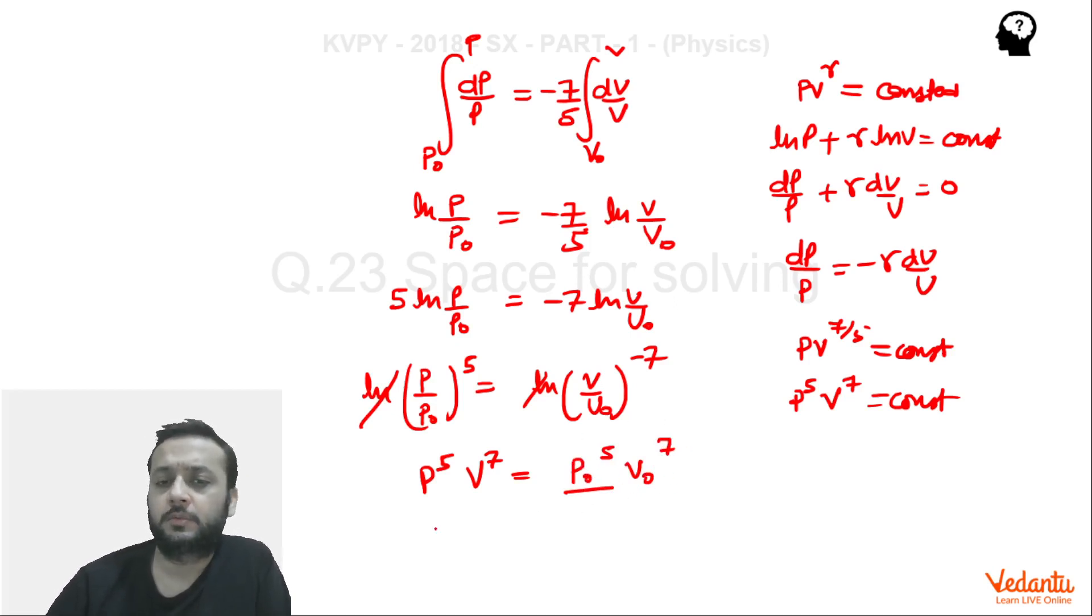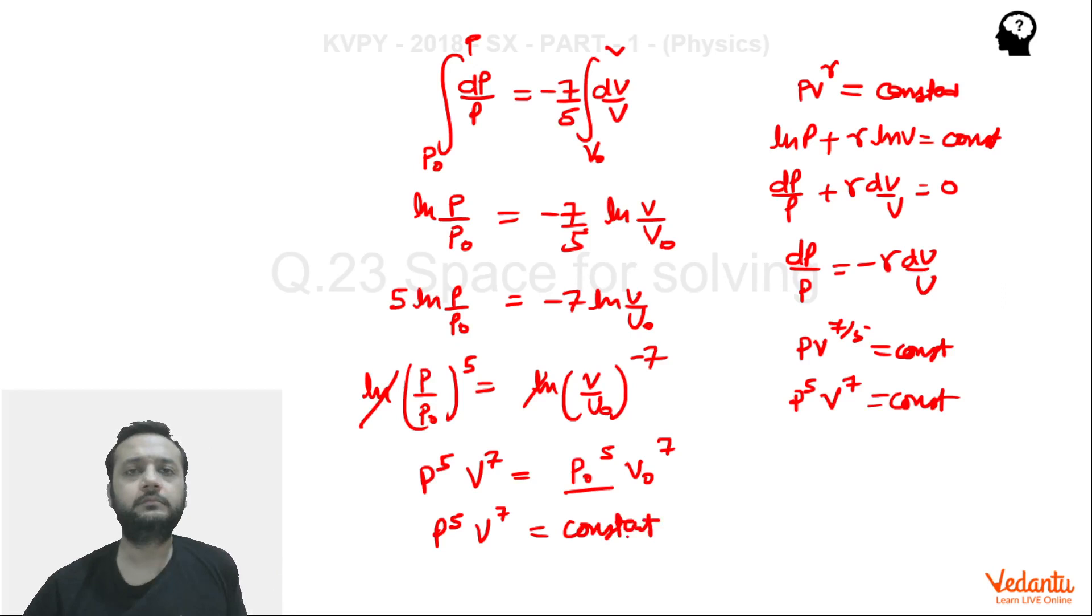So this we know is constant. P₀ will be some initial pressure, V₀ will be some initial volume. So from here we can say that P ki power 5 into V ki power 7 is a constant, okay.